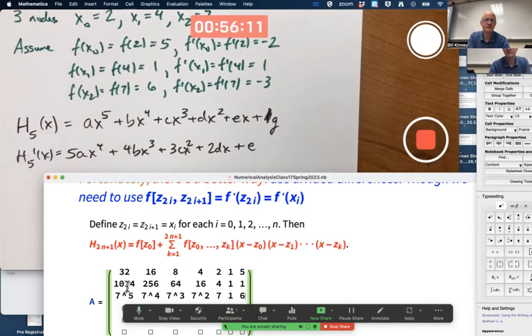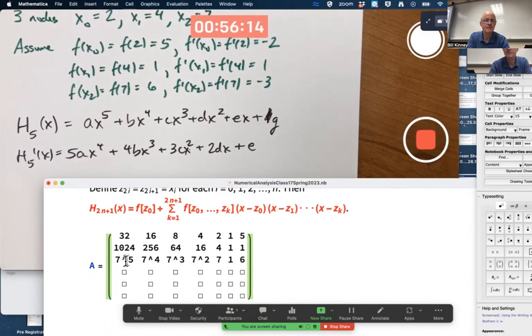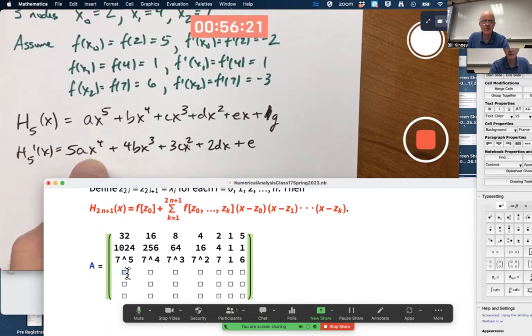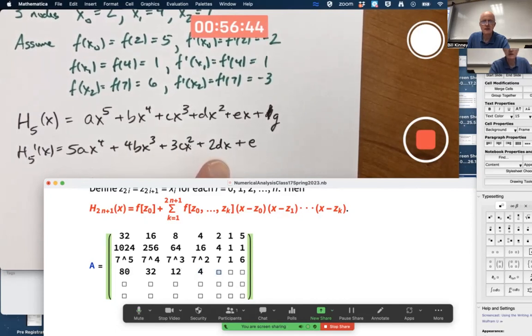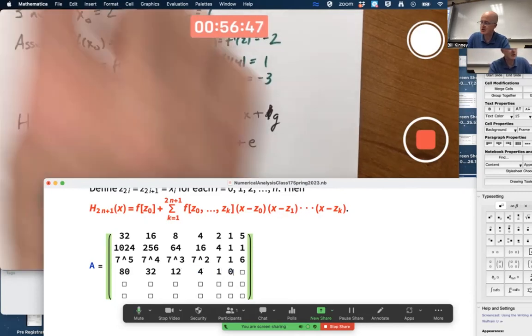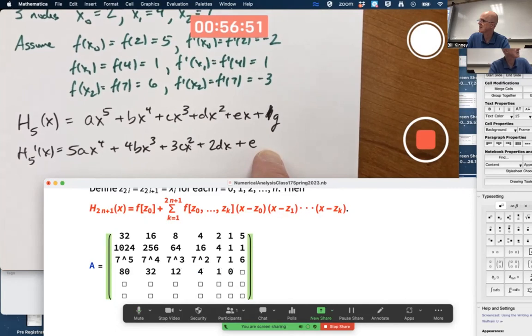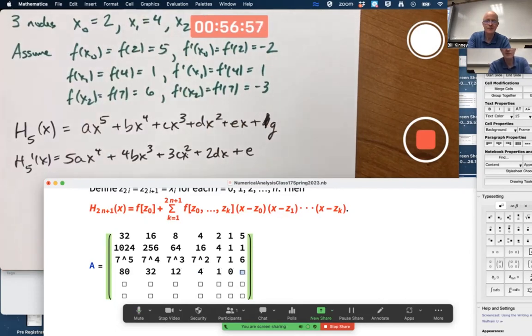Now let's go to the derivative values. First plug in two. Get five times two to the fourth. Two to the fourth is 16 times five is 80. Four times two cubed. Two cubed is eight times four is 32. Two squared is four times three is 12. Two times two is four. Then get a one. Then a zero. There's no G here. In other words, zero times G. Don't forget that zero. That's got to equal negative two.